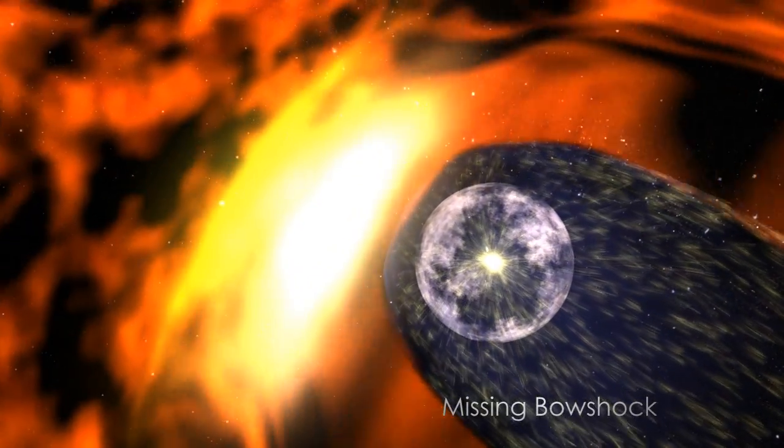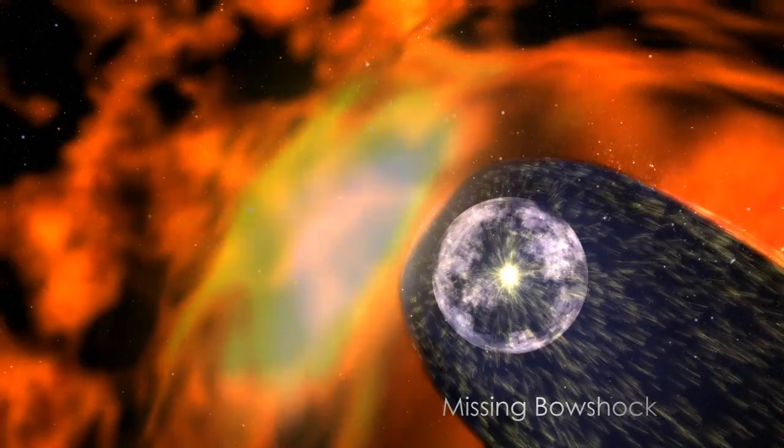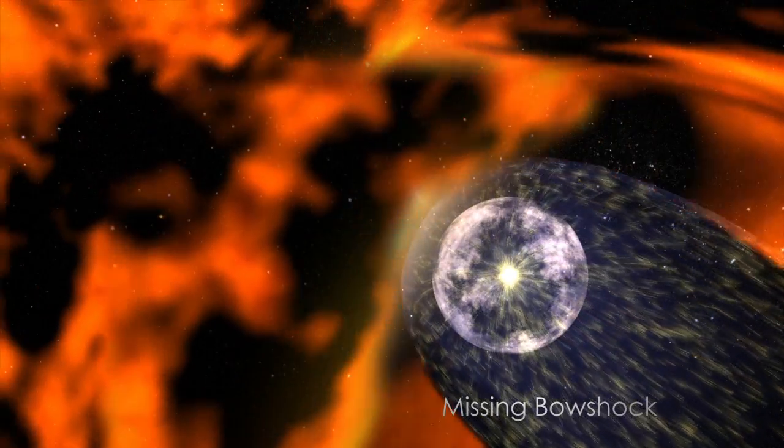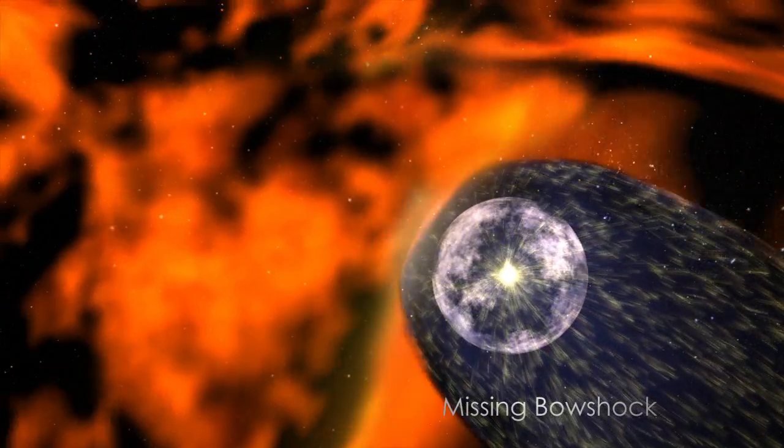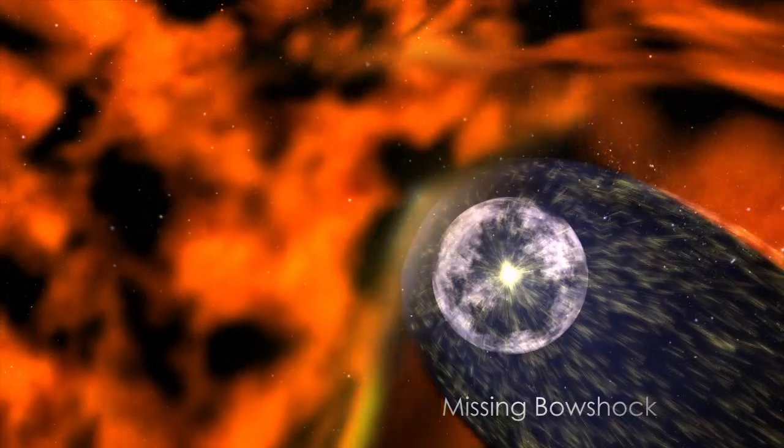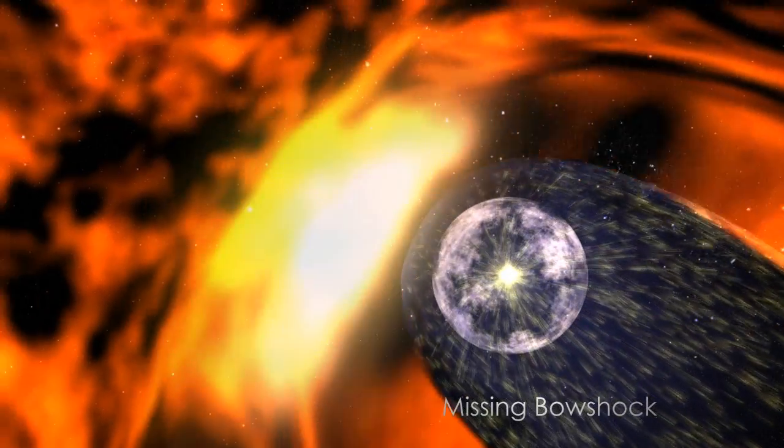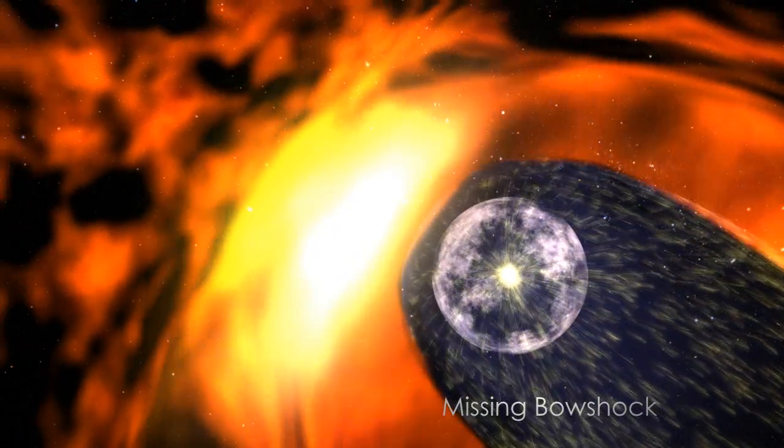New measurements by IBEX have suggested that there is no bow shock to the heliosphere. The previous understanding of the boundary of the heliosphere was that outside the influence of the Sun, a shock wave was formed by the entire heliosphere pushing through the interstellar material around it.